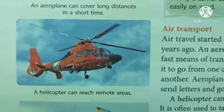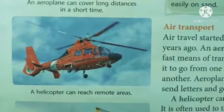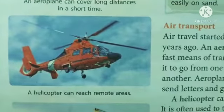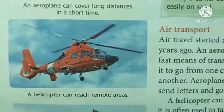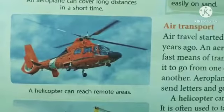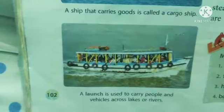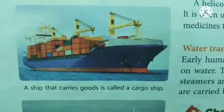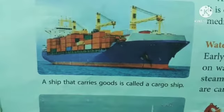Next is water transport. Early humans made rafts to travel on water and used to sail in the sea. Today people use boats, steamers, and ships. Heavy goods are carried by ships. A launch is used to carry people and vehicles across lakes and rivers. A ship that carries goods is called a cargo ship.